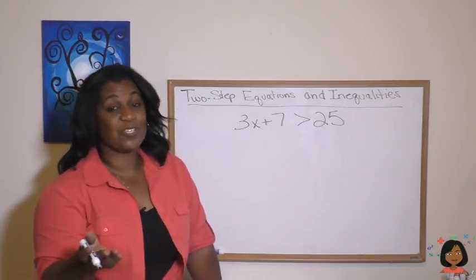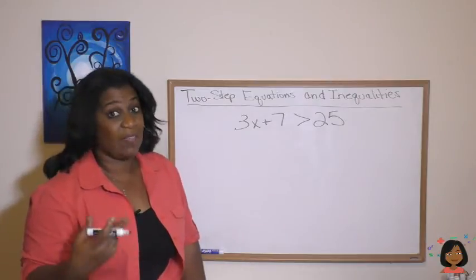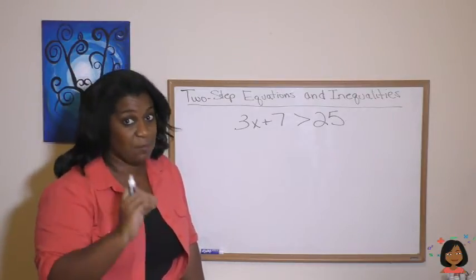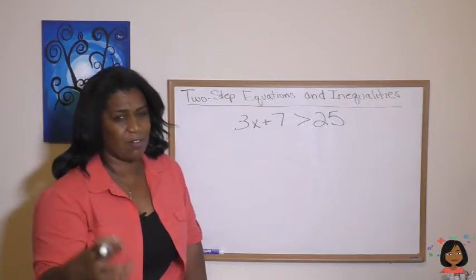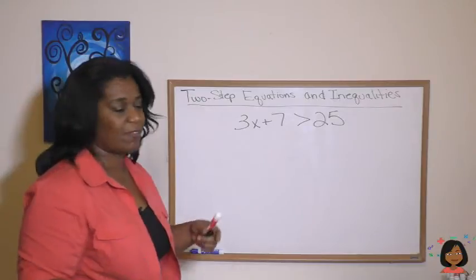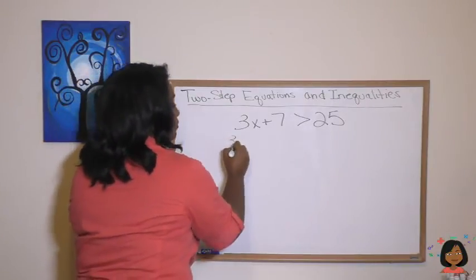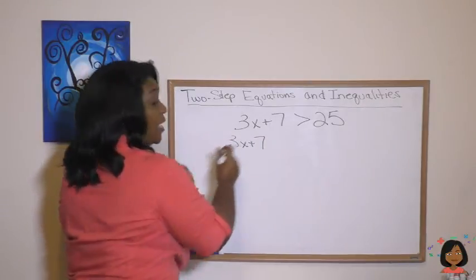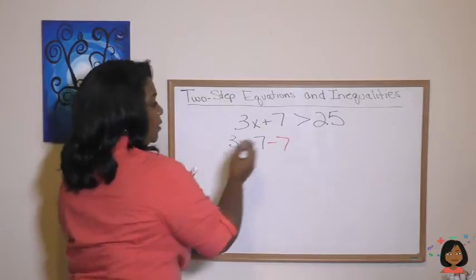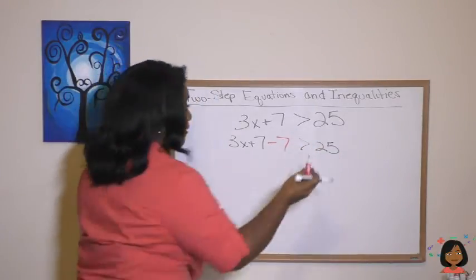The last thing I want to show you is how do we work a problem when we have an inequality? And they've asked us to graph it. Well, let's do the first part, the same process to get us to our answer. And then we'll worry about graphing it. So 3x plus 7 is greater than 25. First thing we got to do is get rid of that 7. So let's rewrite it. 3x plus 7 minus 7 is greater than 25 minus 7.